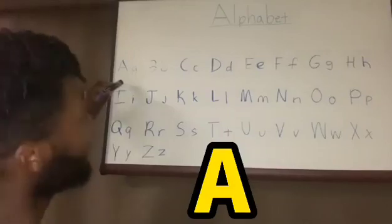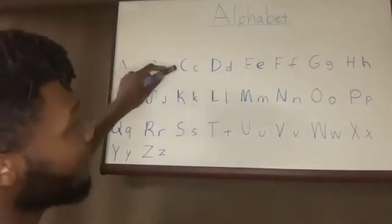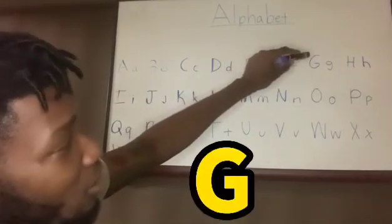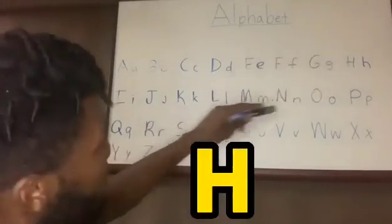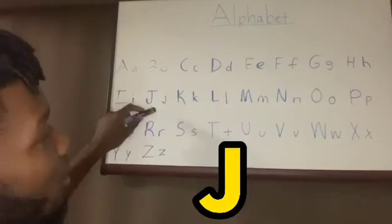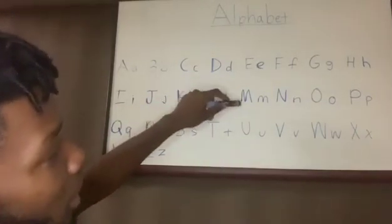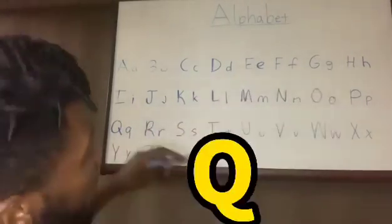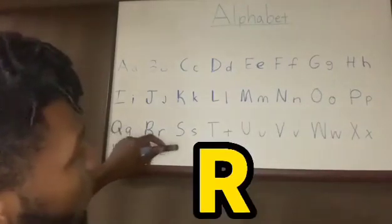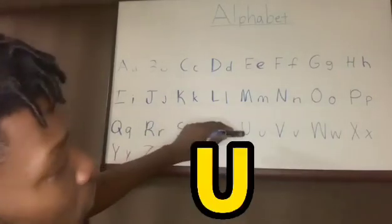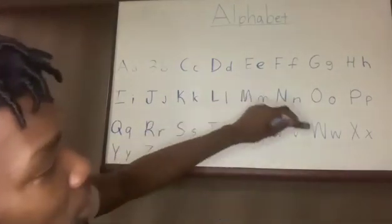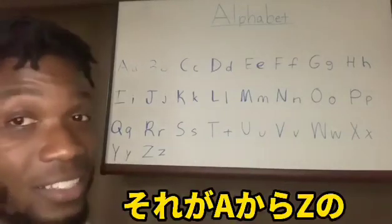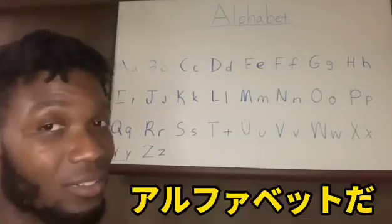First letter we got: A, B, C, D, E, F, G, H, I, J, K, L, M, N, O, P, Q, R, S, T, U, V, W, X, Y, Z. And that's your alphabet — that's A through Z.